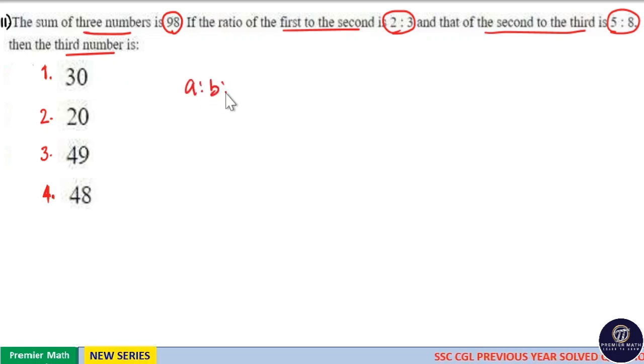Here, consider three numbers are in ratio. The first to the second ratio is 2 to 3, and the second to the third ratio is 5 to 8.